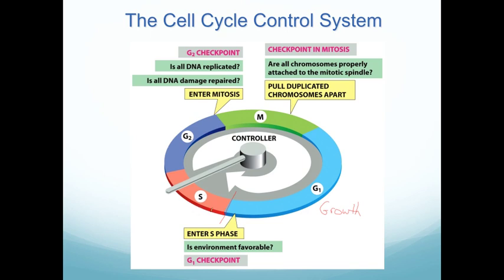Likewise, in S phase you replicate your DNA, and in G2 phase you do a lot of steps to check replication. Before you enter mitosis, the cell wants to stop and ask: did I replicate the DNA properly, or is it damaged? Because once you get into mitosis, you can't correct anything. Then during mitosis, as you separate chromatids into daughter cells, the cell needs to confirm the chromosomes are separated properly and that the cells are far enough apart to divide. All of these steps are part of the cell cycle control system.